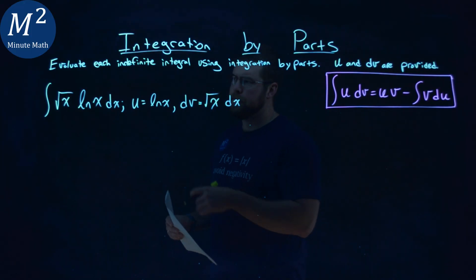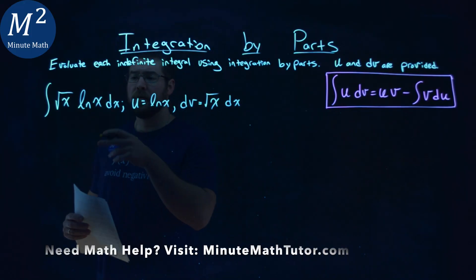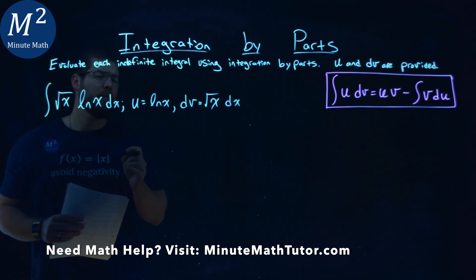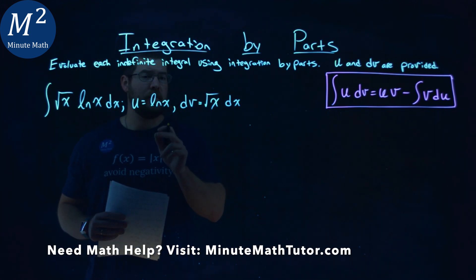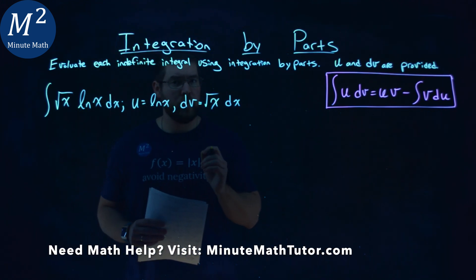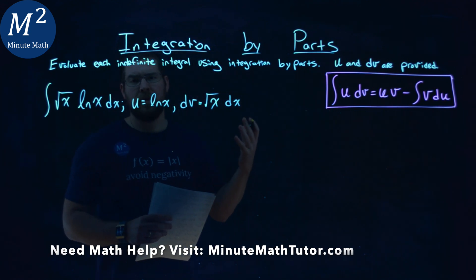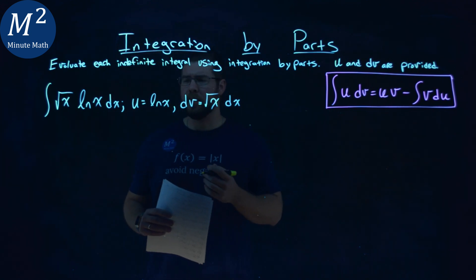We're given this problem right here, the integral of the square root of x natural log of x dx, and we're given a u value of natural log of x and a dv value of the square root of x dx, and we evaluate this indefinite integral using integration by parts.